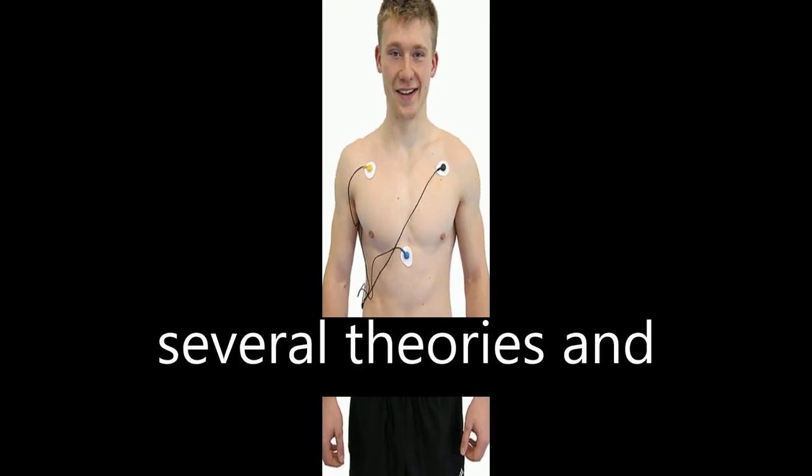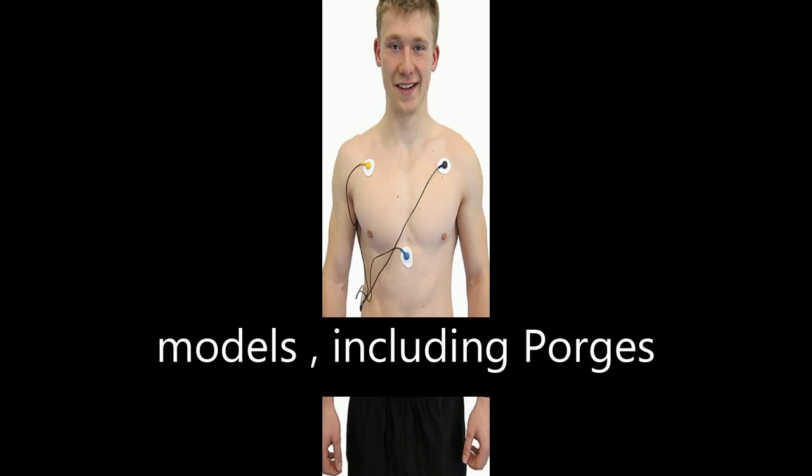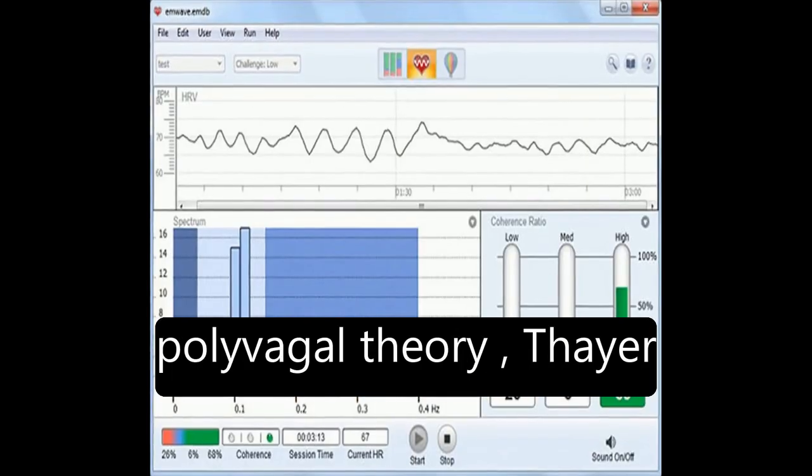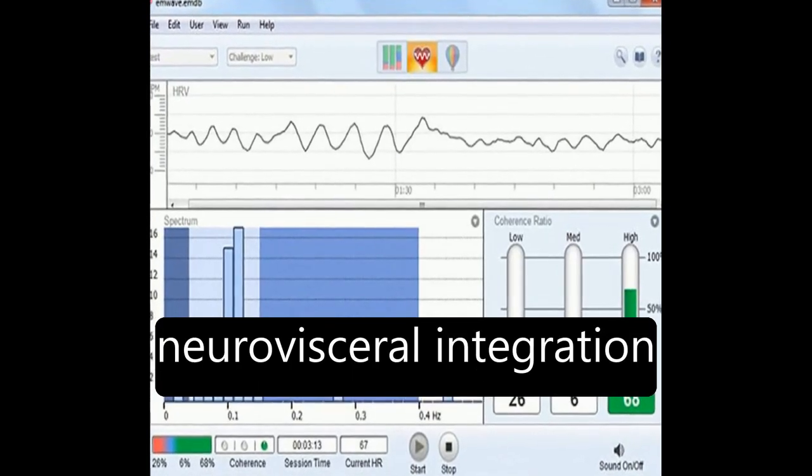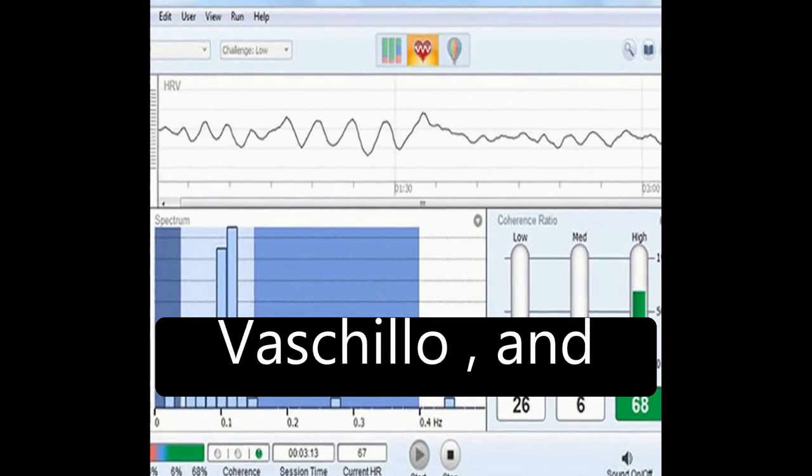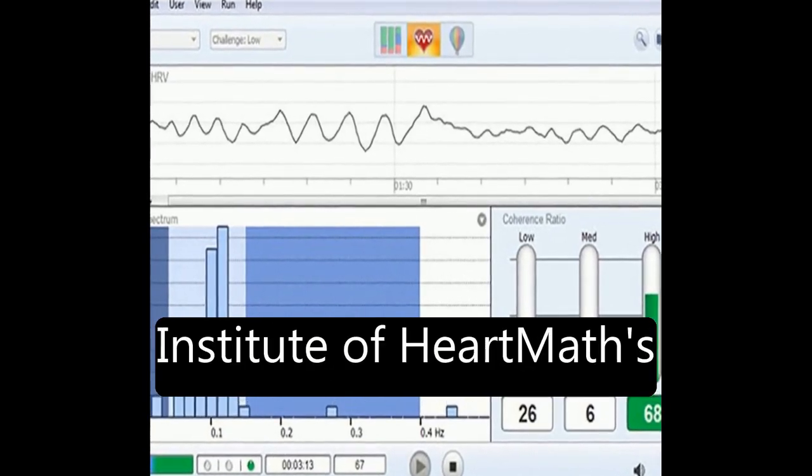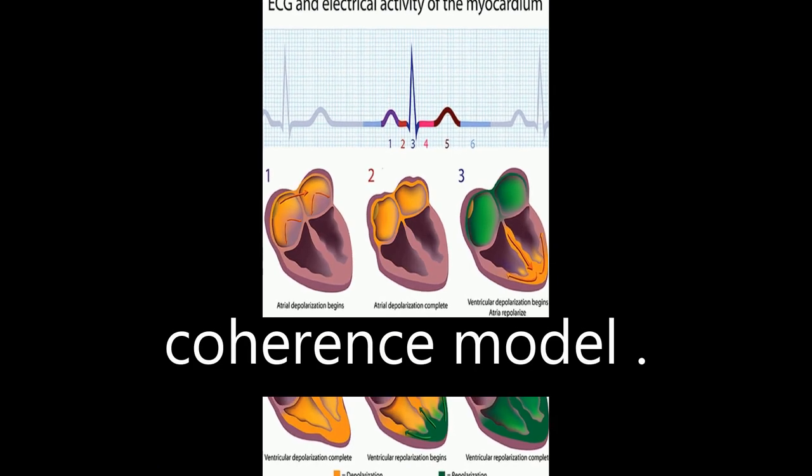The article integrates several theories and models, including Porges' polyvagal theory, Thayer and colleagues' neurovisceral integration model, Lehrer, Vaschillo, and Vaschillo's resonance frequency model, and the Institute of HeartMath's coherence model.